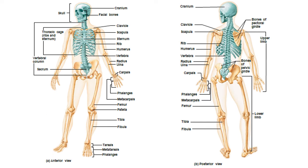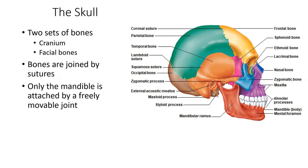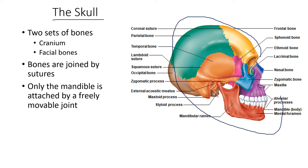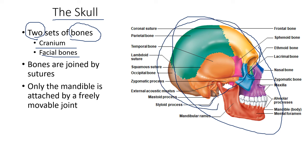If you look at the posterior part, let us talk first about the first division — the skull. The skull is composed of two sets of bones: the cranium and the facial bone. This is the cranium, and this is your facial bone.